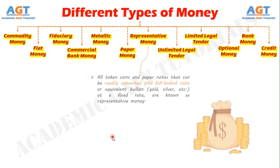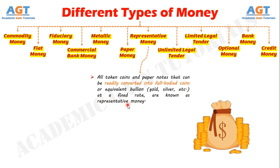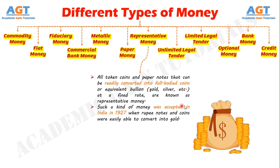Number 7: Representative Money. All token coins and paper notes that can be readily converted into full-bodied coins or equivalent bullion — gold, silver, etc. — at a fixed rate, are known as representative money. Such a kind of money was accepted in India in 1927 when rupee notes and coins were easily able to convert into gold.